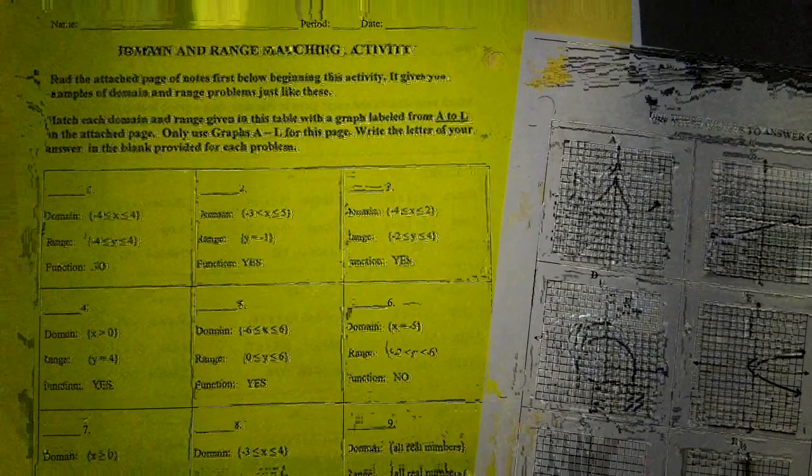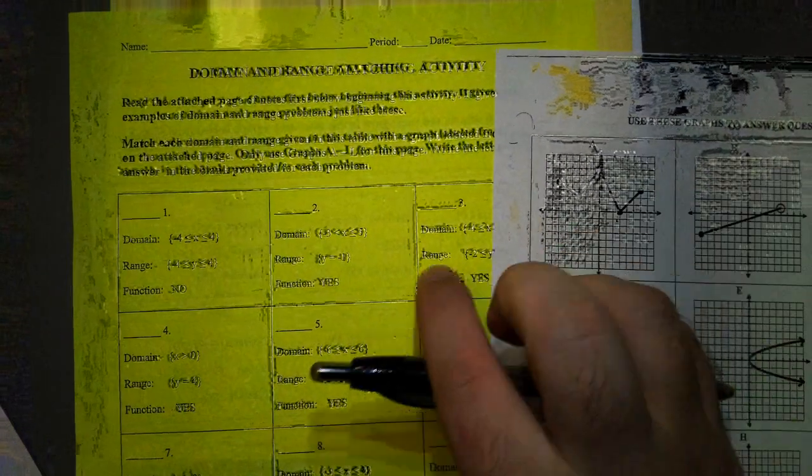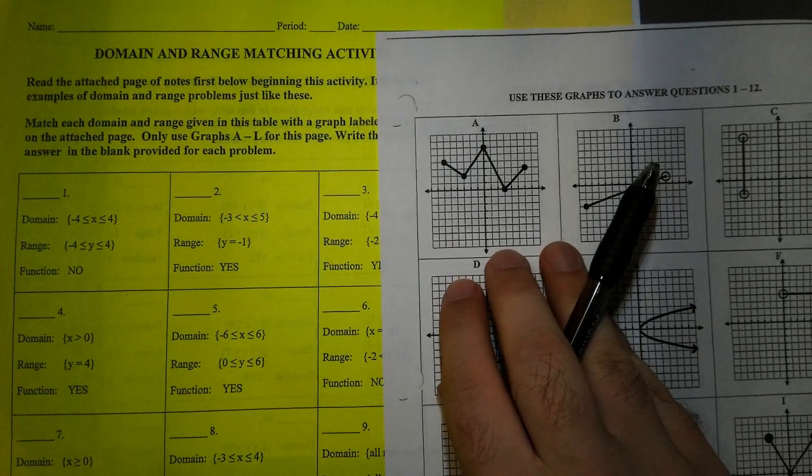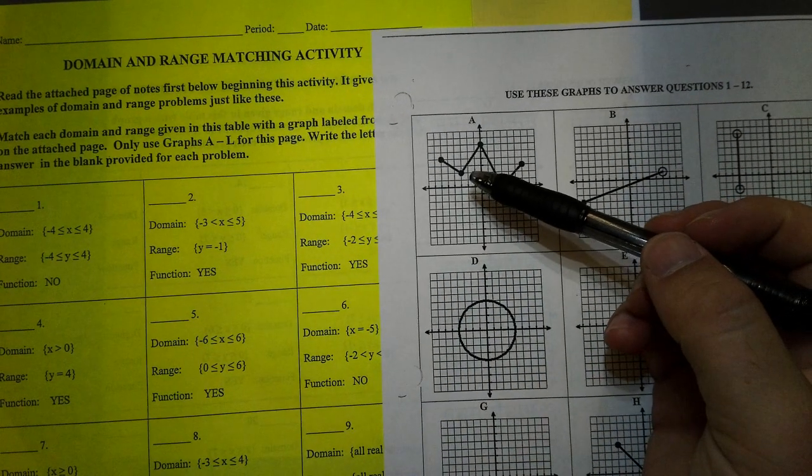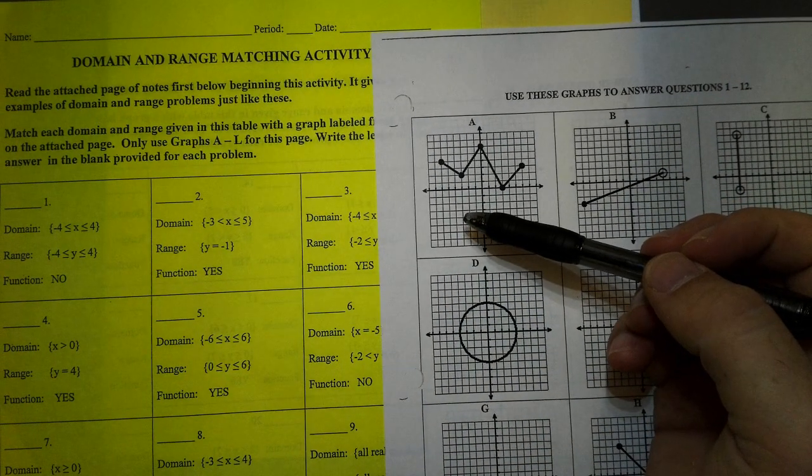So here's how you're going to do the activity. You're going to look at the graph, like let's take graph A. And we're going to find the domain and range on this graph.